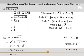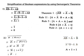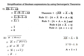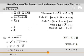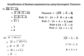Taking A complement common in these two terms gives A complement into (1 plus C complement). Since A plus 1 equals 1, we have 1 plus C complement equals 1, so the result equals A complement.